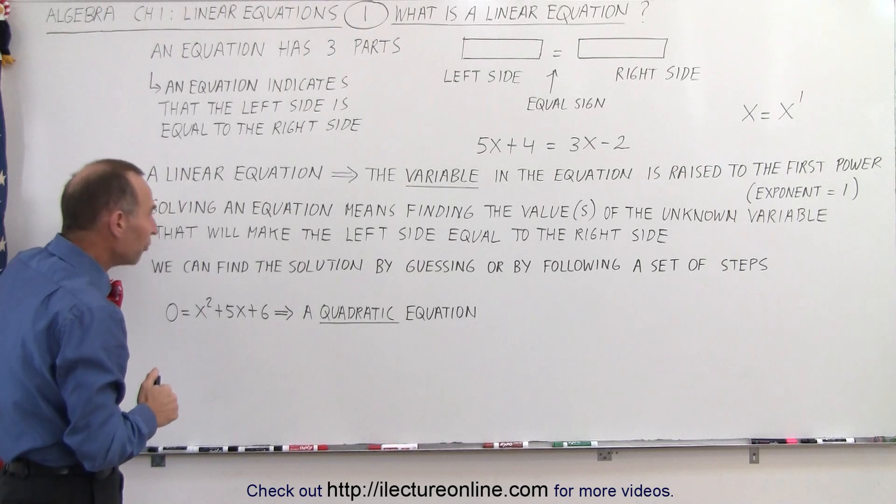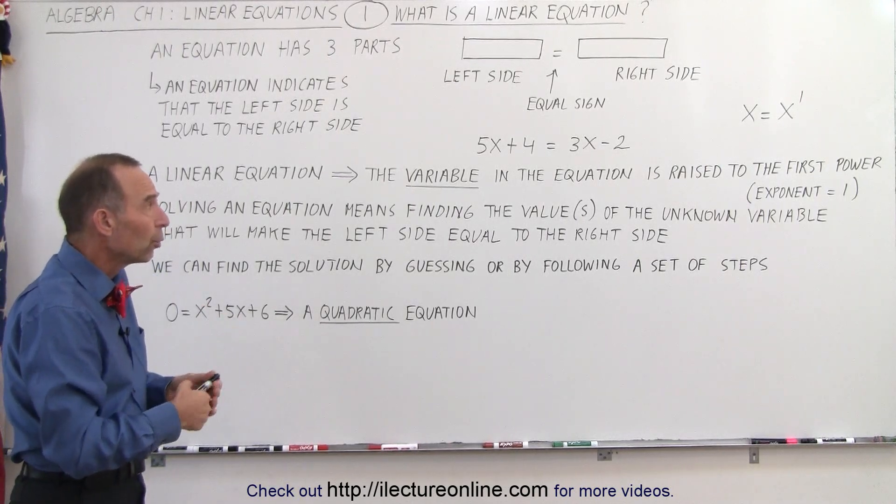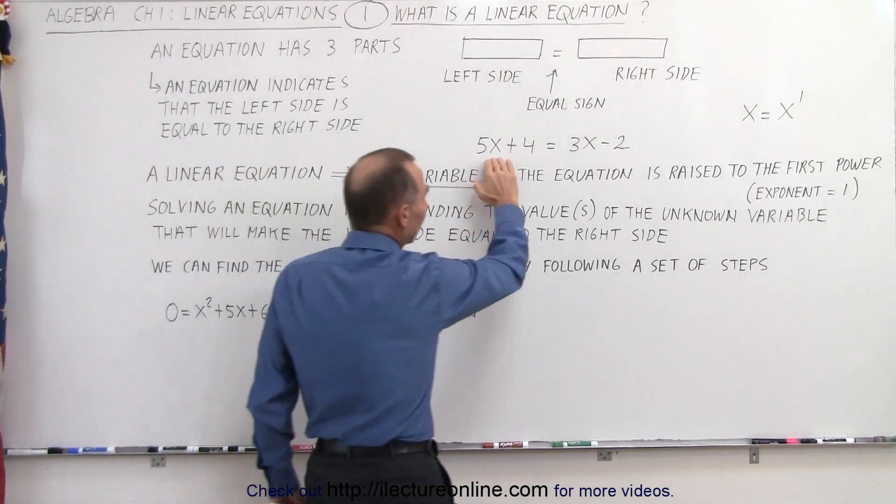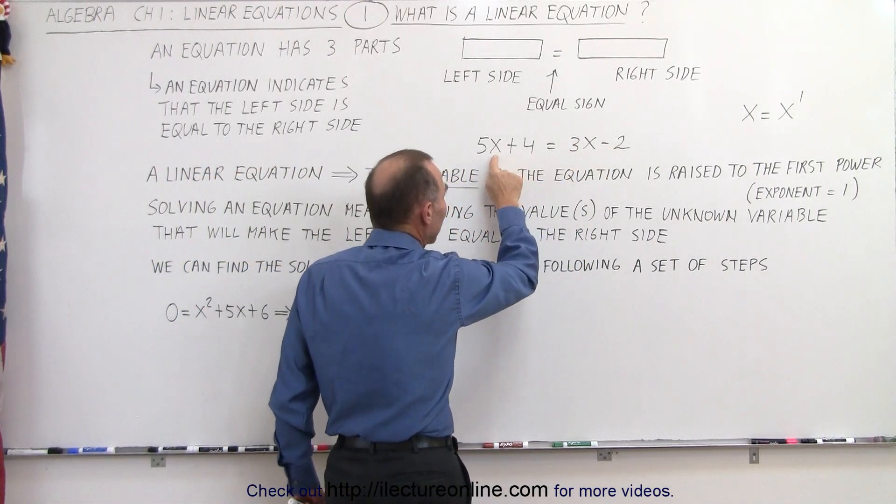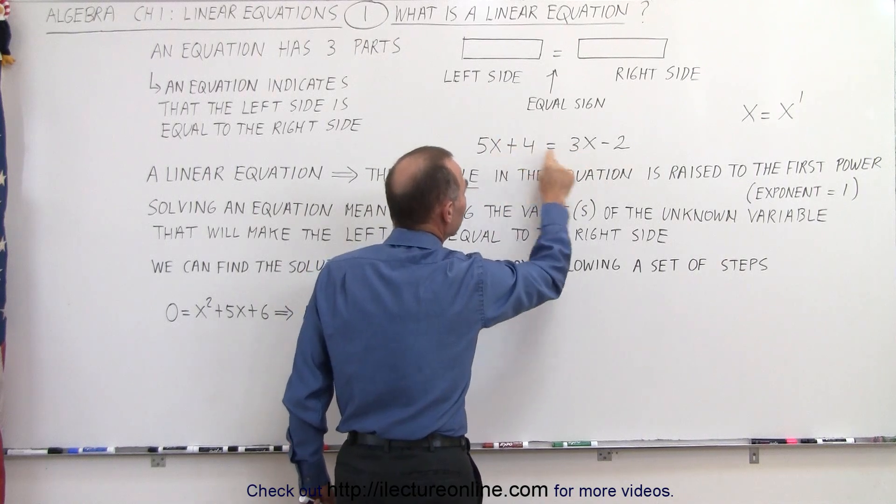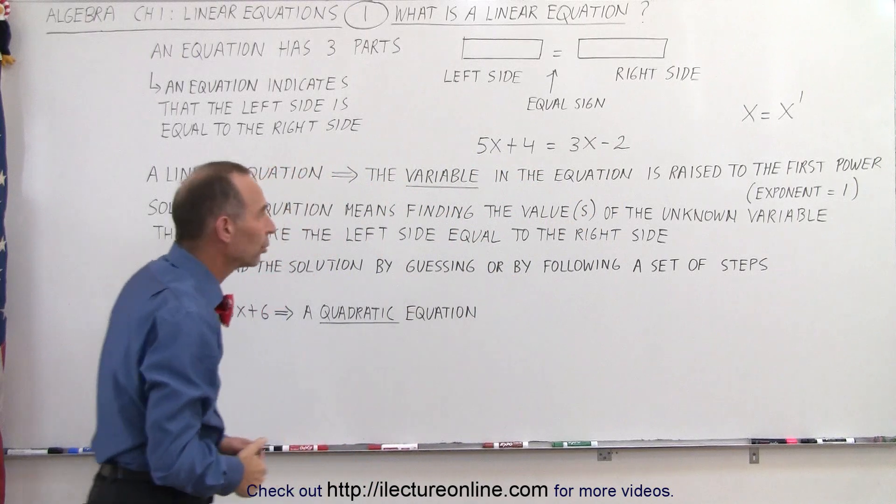Now, when we try to solve an equation, which is usually what we're trying to do, we're typically given an equation that looks like this. This is a typical example of a linear equation because the exponent of the variable here is 1, even though we don't write it. Again, it's implied that it's equal to 1.